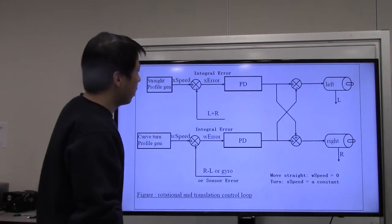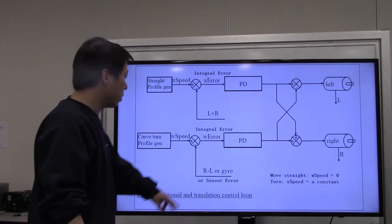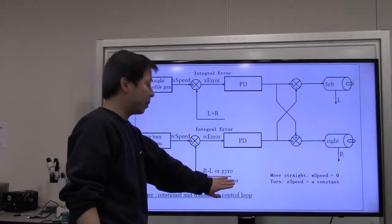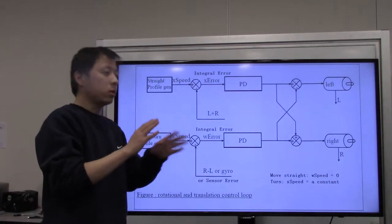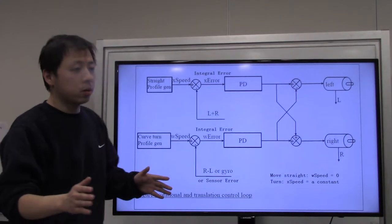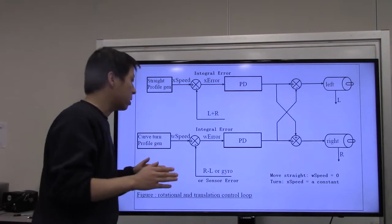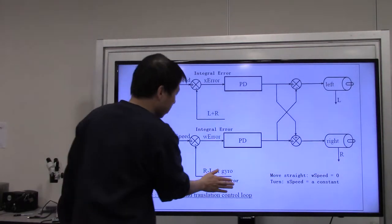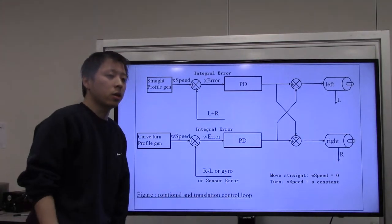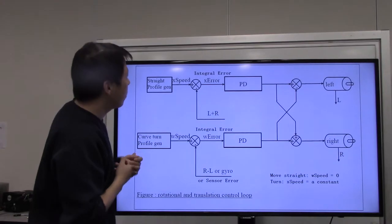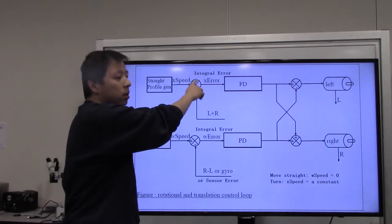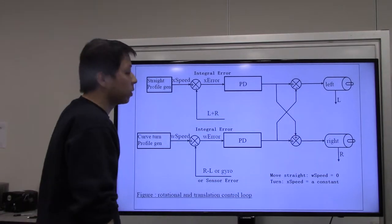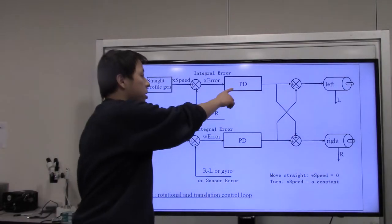Before adding sensor error to the system, first build the controller that runs without sensor error — just the encoder and gyro. The goal is to make your mouse move as straight as possible using only the encoder and gyro. According to our controller design, the error should accumulate in order to provide more robust position control. That's why this is called a positional PD controller.